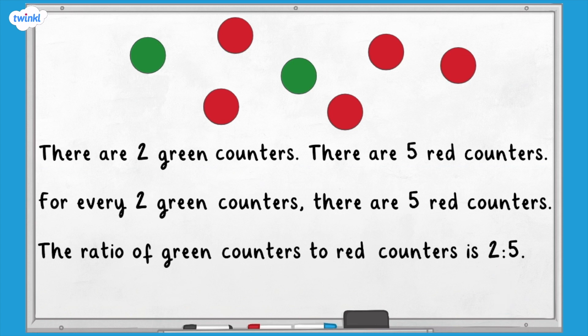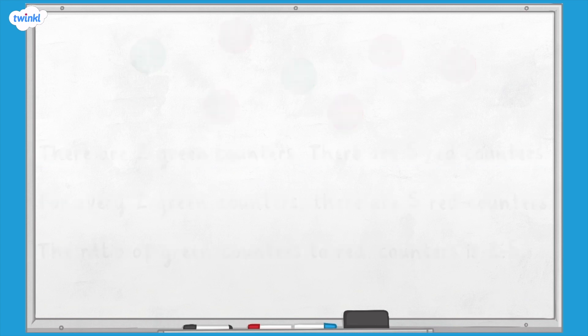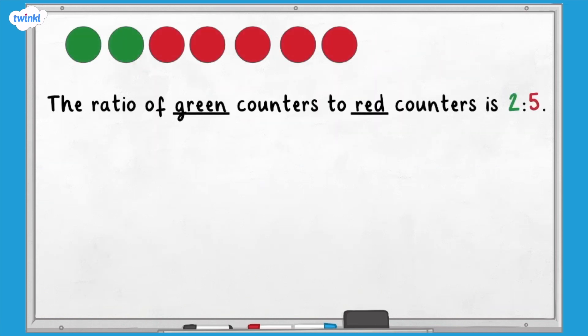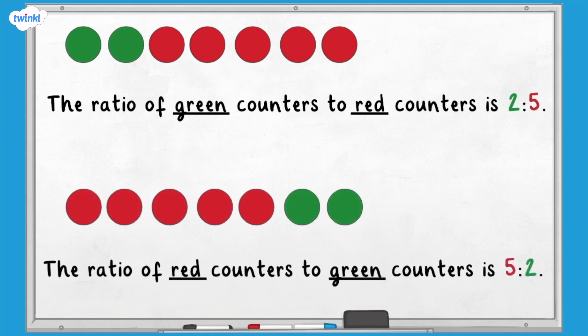When we use a ratio symbol, it's important to get the numbers the correct way round. The ratio of green counters to red counters is two to five — the number of green counters comes first, then red. The ratio of red counters to green counters would be five to two — the number of red counters first, then green.